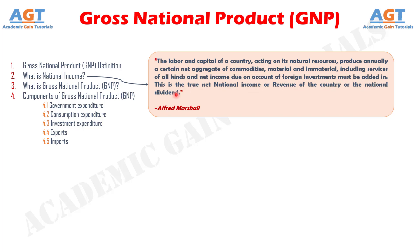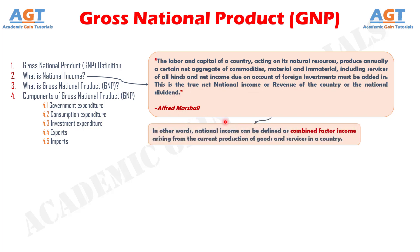This is the true net national income or revenue of the country or the national dividend. In other words, national income can be defined as combined factor income arising from the current production of goods and services in a country.